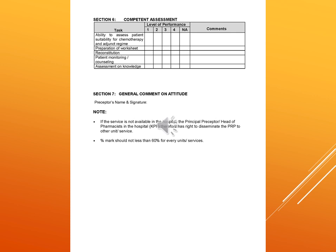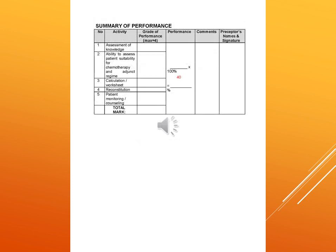Section 7 includes general comments on attitude followed by the preceptor's name and signature. If a service is not available in the hospital, the principal preceptor or head pharmacist has the right to assess the PRP's abilities. The percentage mark must not be less than 60% for every unit or service. The summary of performance includes activities such as assessment of knowledge, ability to assess patient suitability for chemotherapy and appropriate dosage form, calculation and worksheet, reconstitution, and patient monitoring and counselling. Grade of performance is calculated as performance multiplied by 100% divided by 40, with comments and preceptor's name and signature.